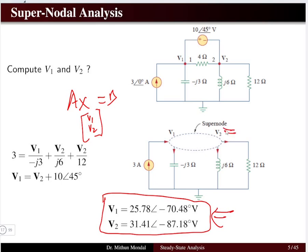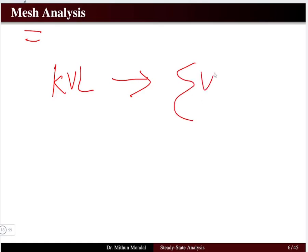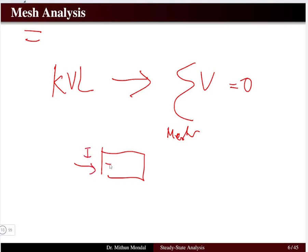The problem-solving approach remains the same whether we have resistors, inductors, or capacitors — the general method does not change. Now for mesh analysis: a quick revision — mesh analysis is based on KVL, where the algebraic sum of all voltages in a closed mesh equals zero, applying the passive sign convention.